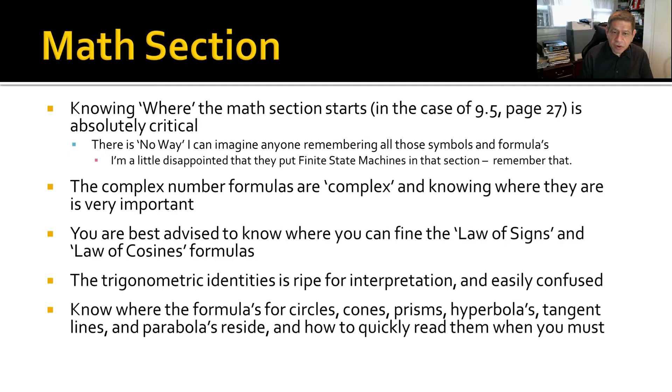You are best advised to know where you can find the law of sines and the law of cosine formulas. The trigonometric identities is ripe for interpretation and easily confused. So go through those. See how they present it. Sometimes the way the FE manual presents things is not the way you would see it in a regular textbook. Know where the formula for circles, cones, prisms, hyperbolas, tangent lines, parabolas all reside and how to quickly get to them.